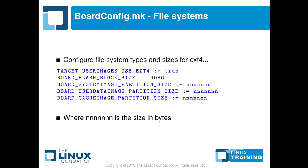Then there's a section which defines the system images that will be created and their format. Here, we're creating ext4 format images, which will in fact end up ultimately on an SD card of a BeagleBone. We define the sizes of those images in bytes. There are three images: the system partition, the user data partition, and the cache partition.